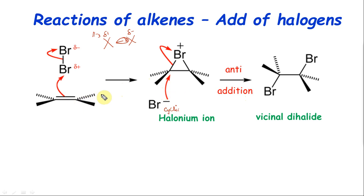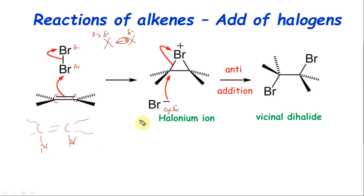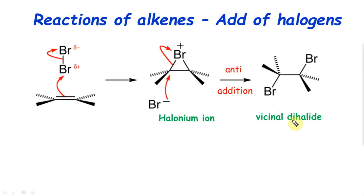Since there's no carbocation, there's no rearrangement — the reaction happens only at the C=C position. You put one Br here and one Br there — that's your product. It must be anti addition, forming a vicinal dihalide via the halonium ion. You can go back to the alkene from the dihalide by using zinc.